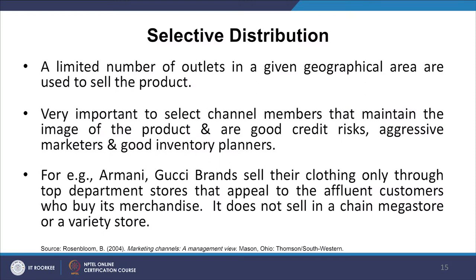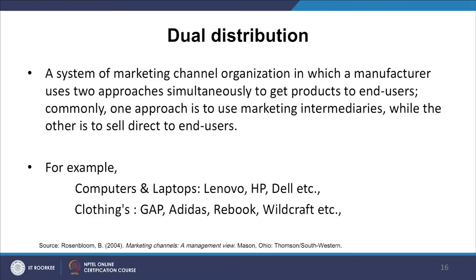The same logic applies to selective distribution. For example, Armani and Gucci sell their clothing only through top, high-end departmental stores, focusing on a very specific buyer's paying capacity — or paying desire, as one might say. Dual distribution is also there: a system in which a manufacturer uses two approaches simultaneously to get products to end users. Commonly, one approach uses marketing intermediaries while the other sells direct to end users. Dell and Lenovo have done that, and several others have been doing so.